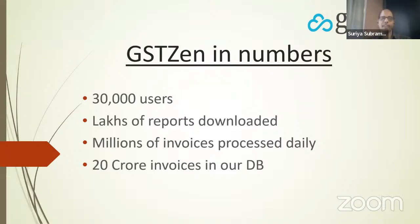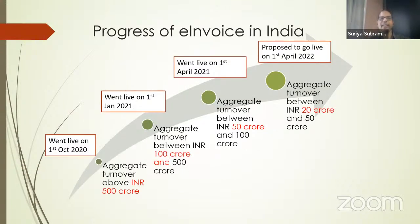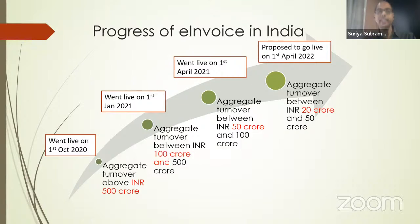We expect it to increase further when the 20 crore and above taxpayers enter the e-invoicing realm. E-invoicing started first with 500 crore and above taxpayers — those with aggregate turnovers more than 500 crores — in October 2020. In January 2021, the limit was lowered to 100 crores and above. On 1st April 2021 the limit became 50 crores, and now as per the latest notifications, taxpayers with 20 crores and above will be in the e-invoicing bracket. The system has worked smoothly and people have generated millions, if not billions, of e-invoices.